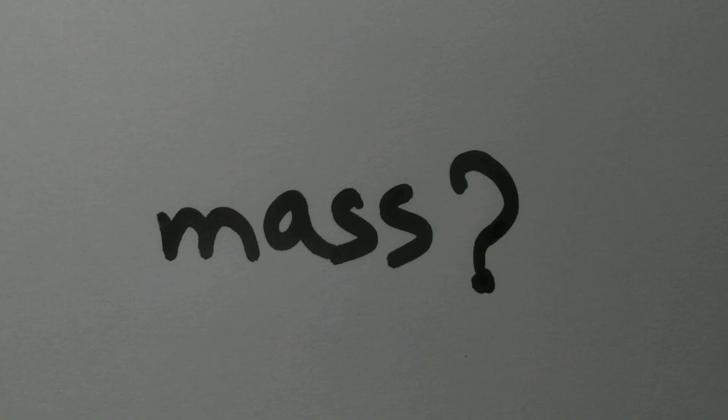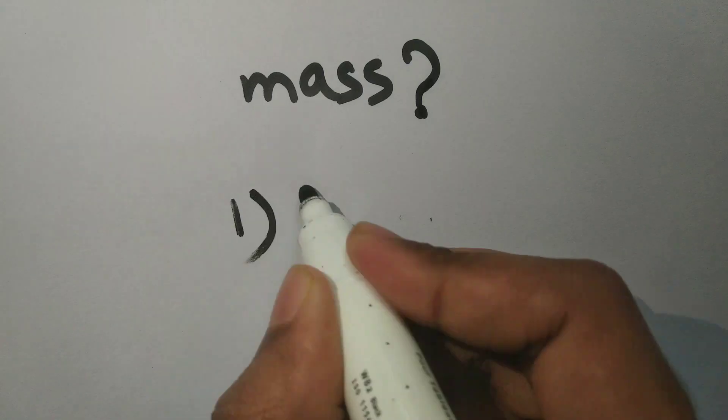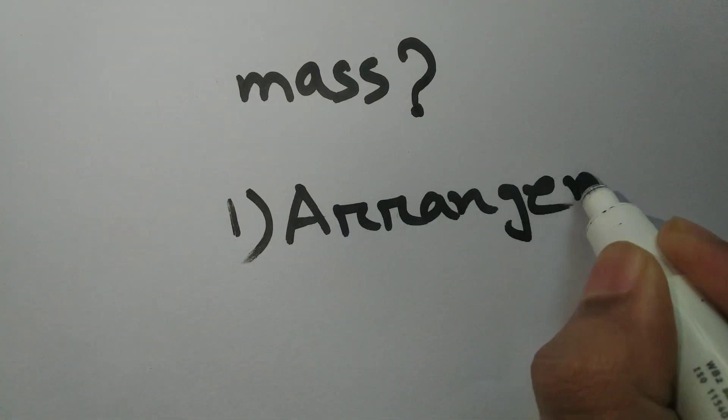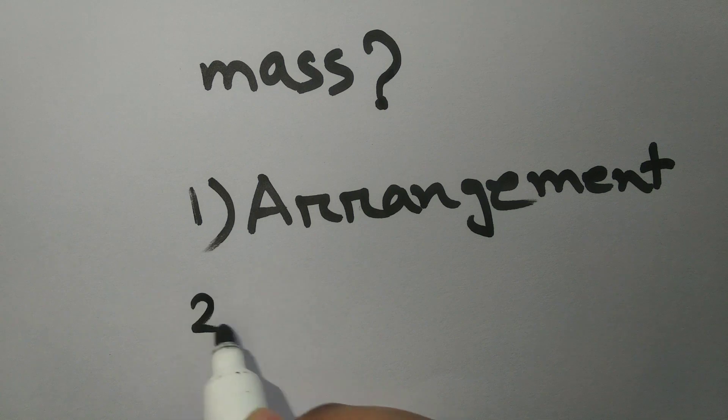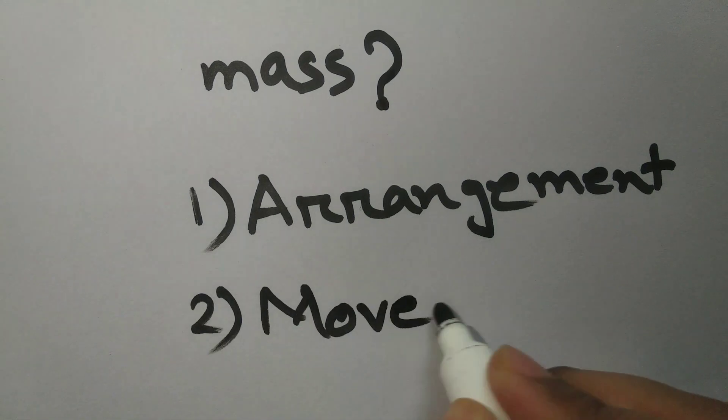First thing first, what is mass? The answer depends on two facts. Number one, how the parts are arranged into a body. And number two, how they move into a bigger object.